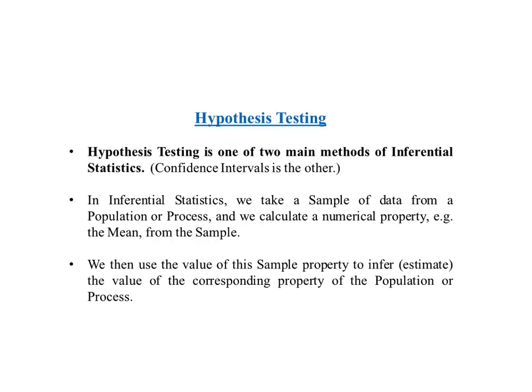Then we could do a hypothesis test for means — we would use a t-test. The test could tell us, for example, whether there was a statistically significant difference between our sample mean and a comparison mean. Hypothesis tests include t-tests, f-tests, ANOVA, and so on. A hypothesis test can be performed in five steps, as we'll show on the next slide.